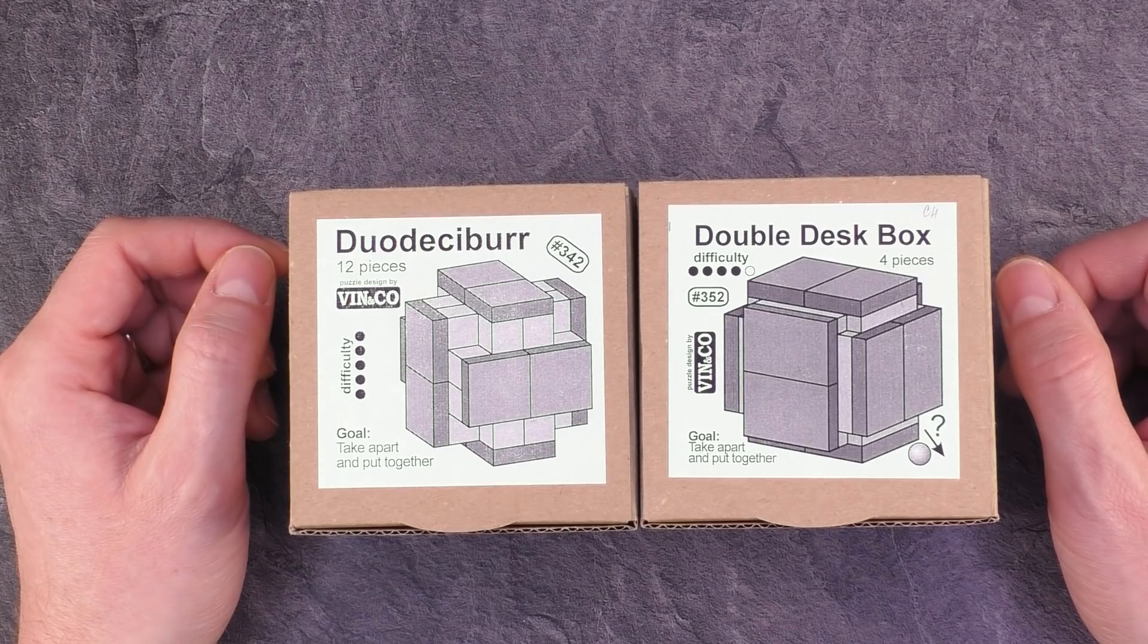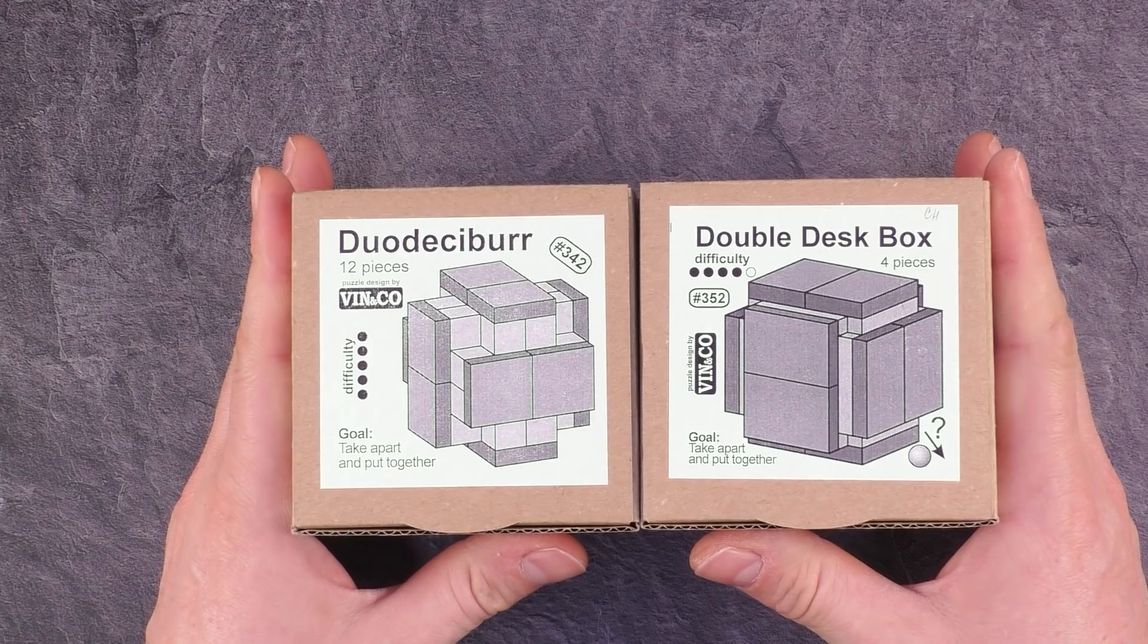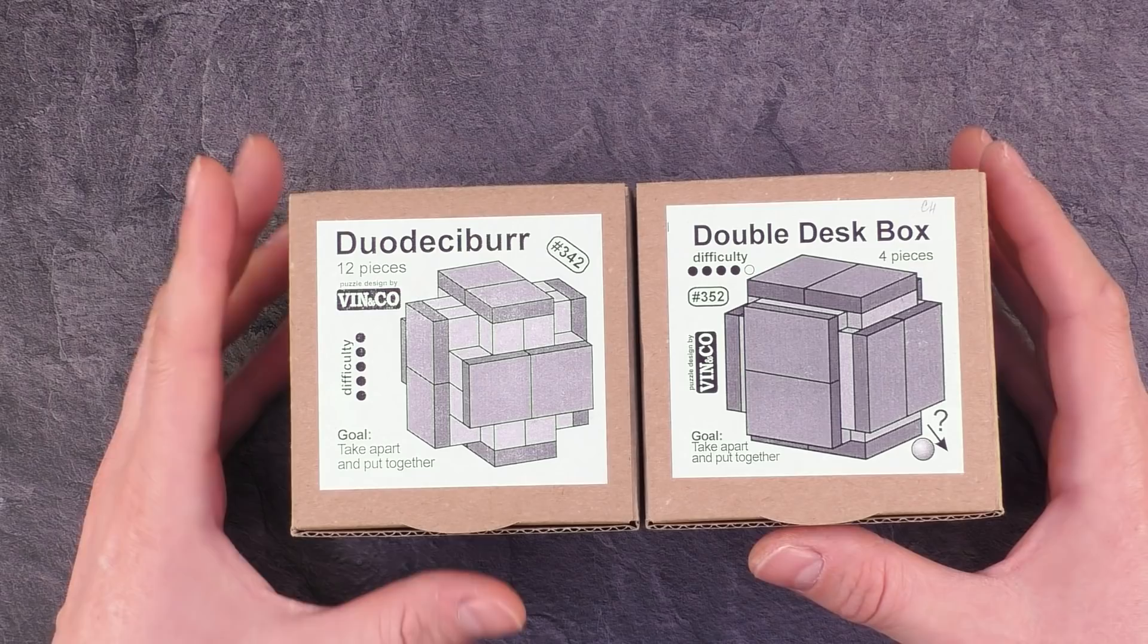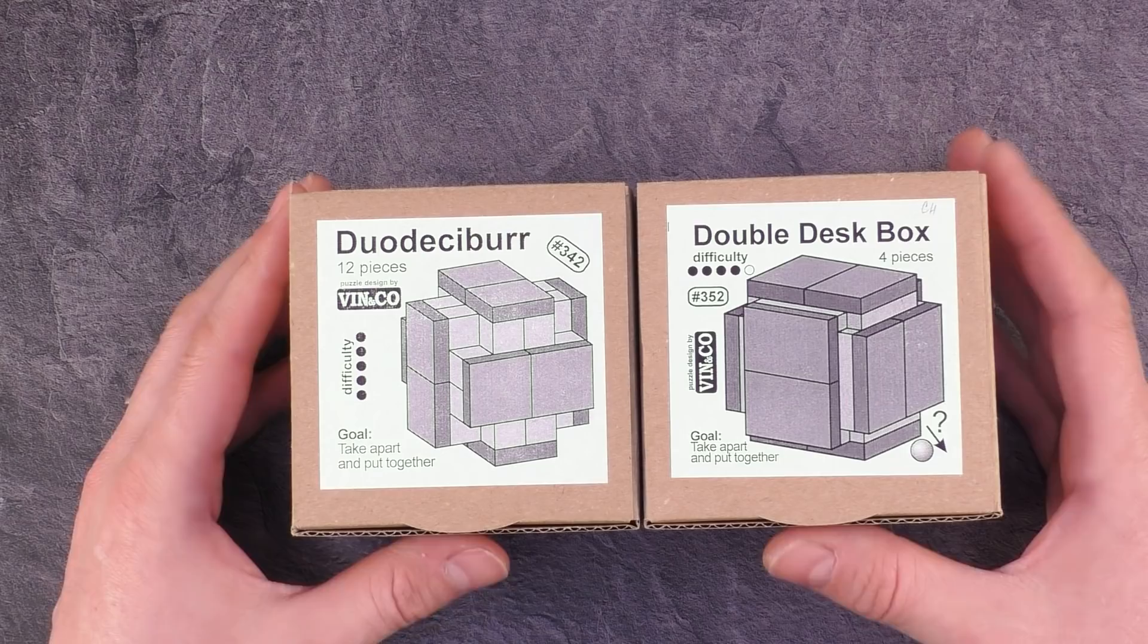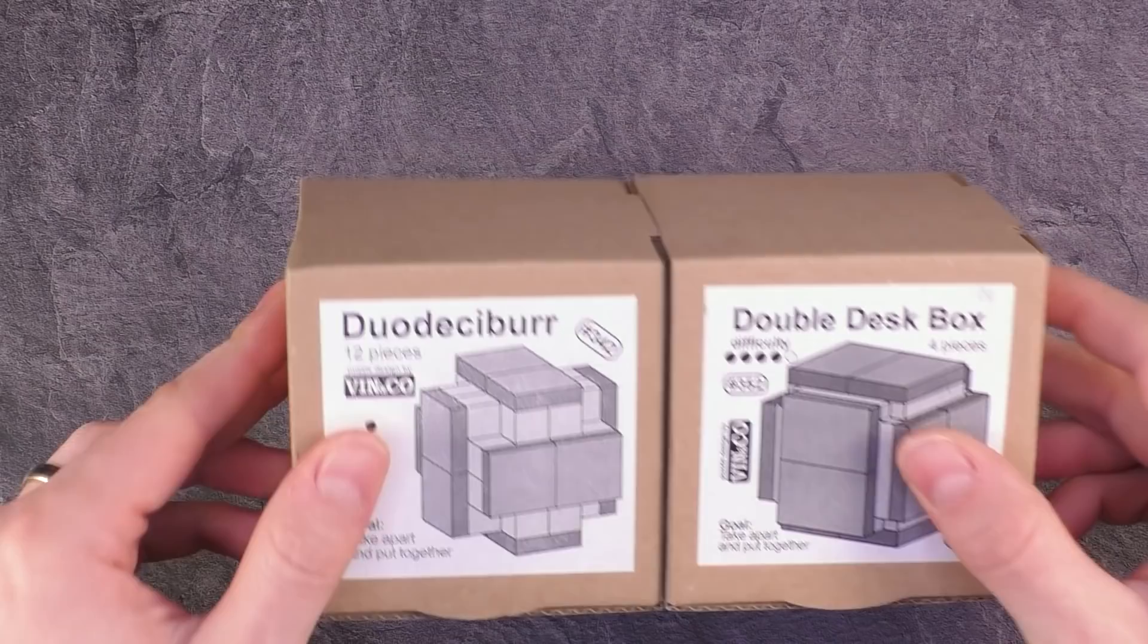I reviewed some of the Vinko puzzles before, and these two are same as the ones before, coordinated motion puzzles. I need to take them apart and put them back together. These are rated difficulty 4 and difficulty 5 on the Vinko scale. Let's have a first look inside, how these puzzles look like.